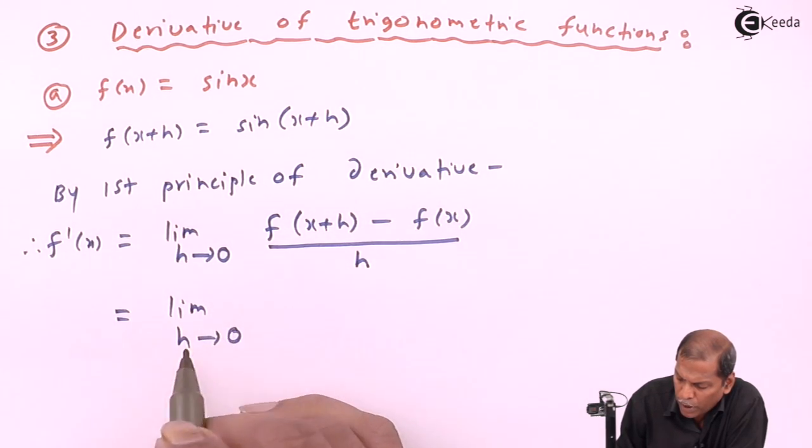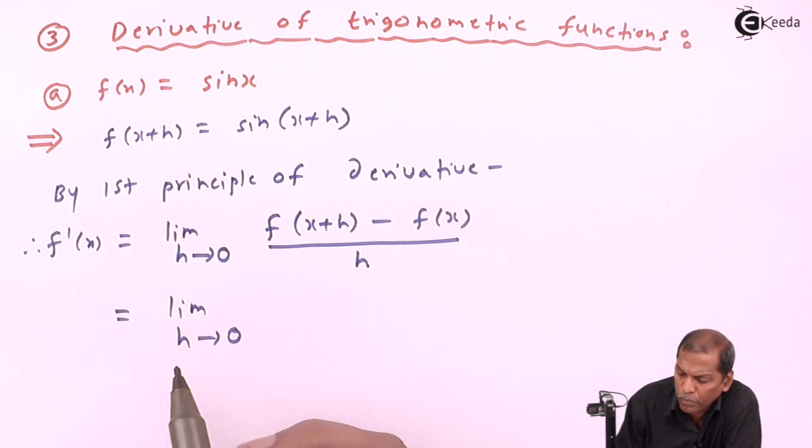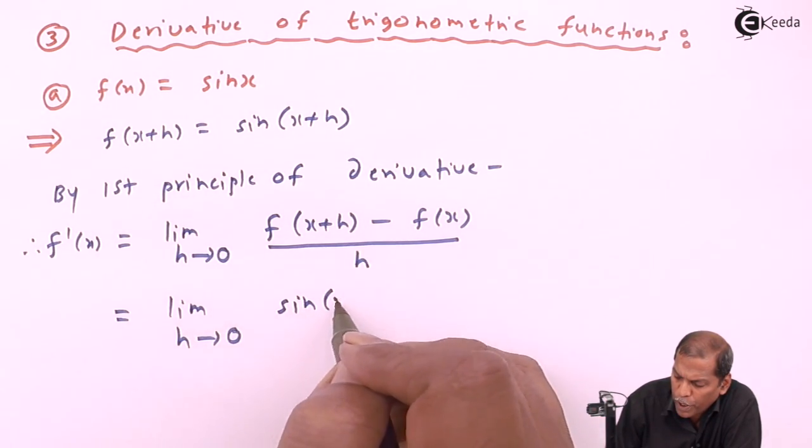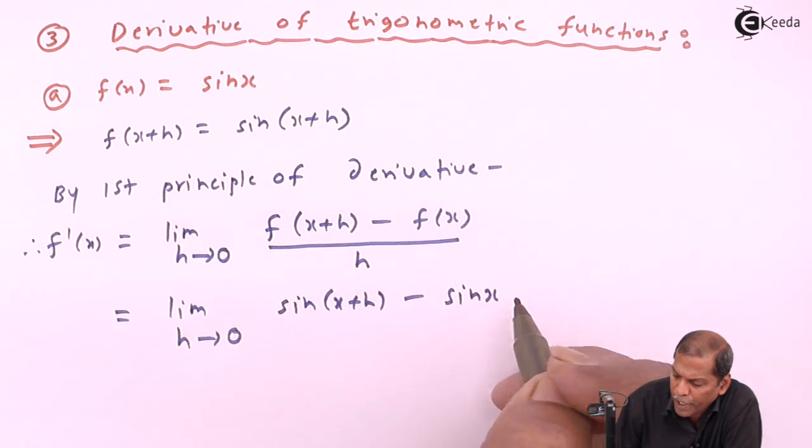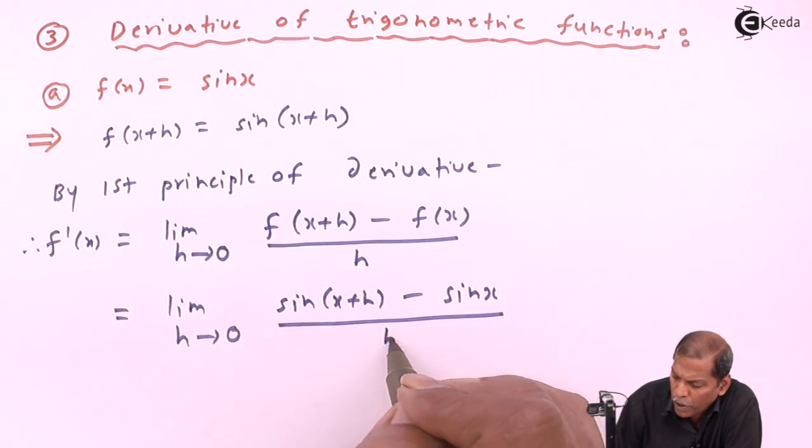That equal to limit h tends to zero, sine of (x+h) minus sine of x upon h.